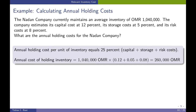Recall, the holding costs are just the sum of the storage costs, the risk costs, and the working capital costs. So we just need to sum up these percentages and take them from the 1,040,000 Omani Real, which gives us an annual cost of holding inventory of 260,000 Omani Real.